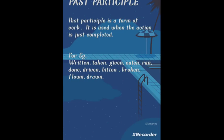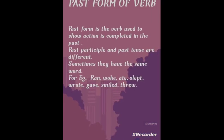Next we are going to study past participle. Past participle is a form of verb used when the action is just completed. For example: I have written some notes, she has taken her dinner, I have given my notes to the teacher. More examples: eaten, ran, done, driven, beaten, broken, flown, and drawn. This form tells us the action is just completed — we have spoken to her. Write two examples in the comment box.